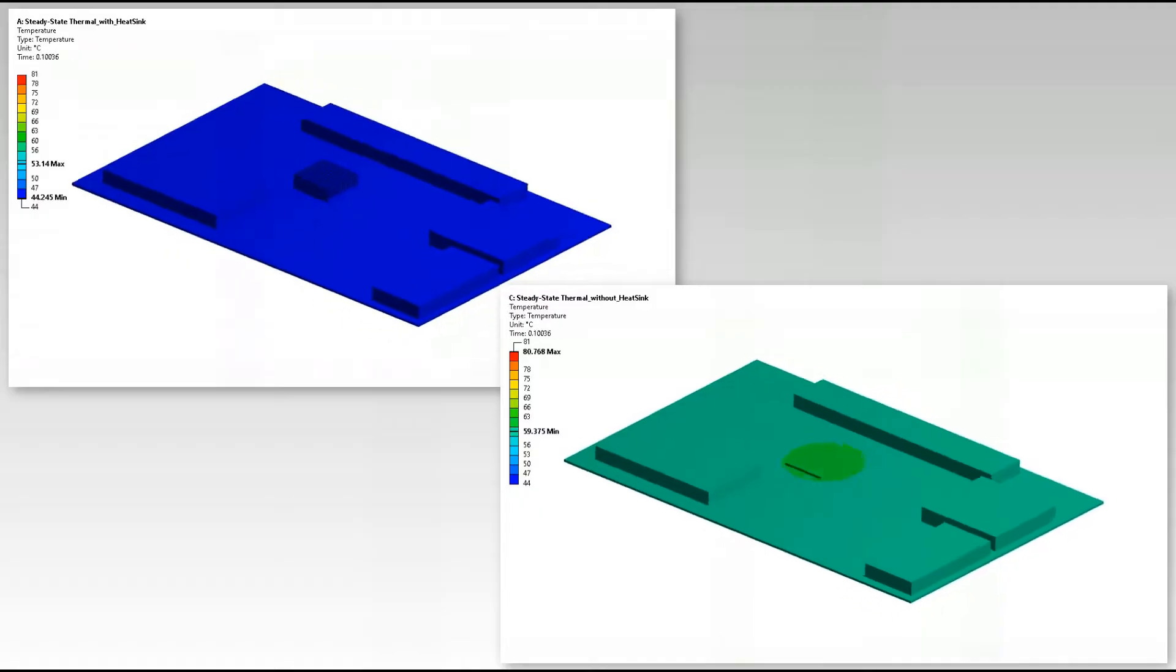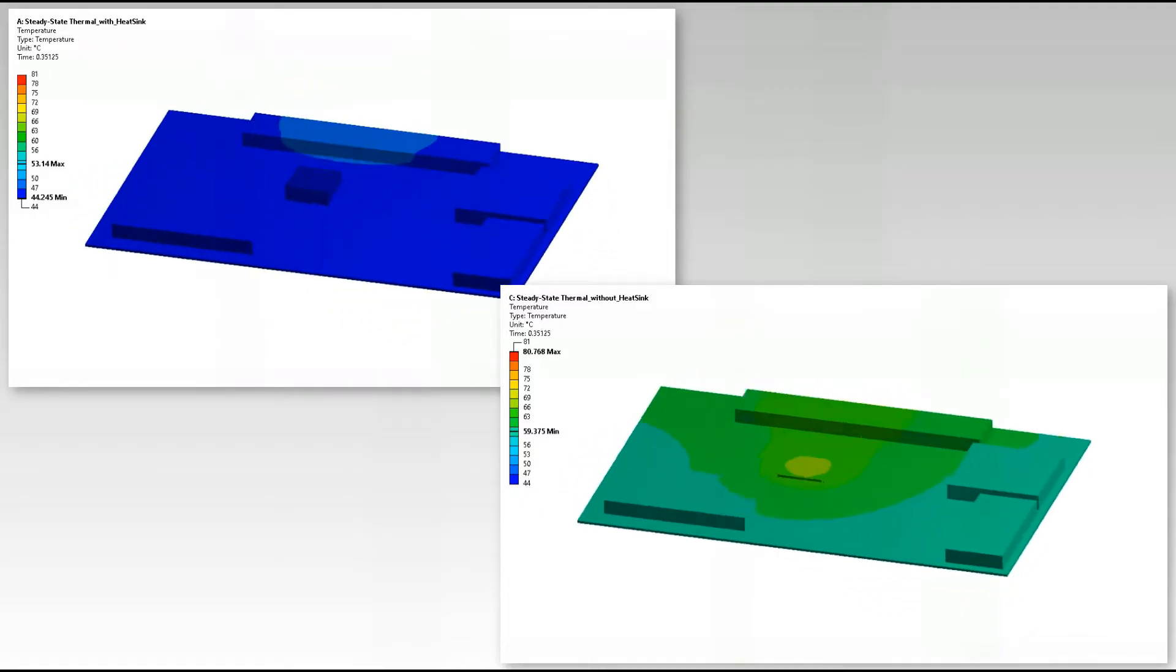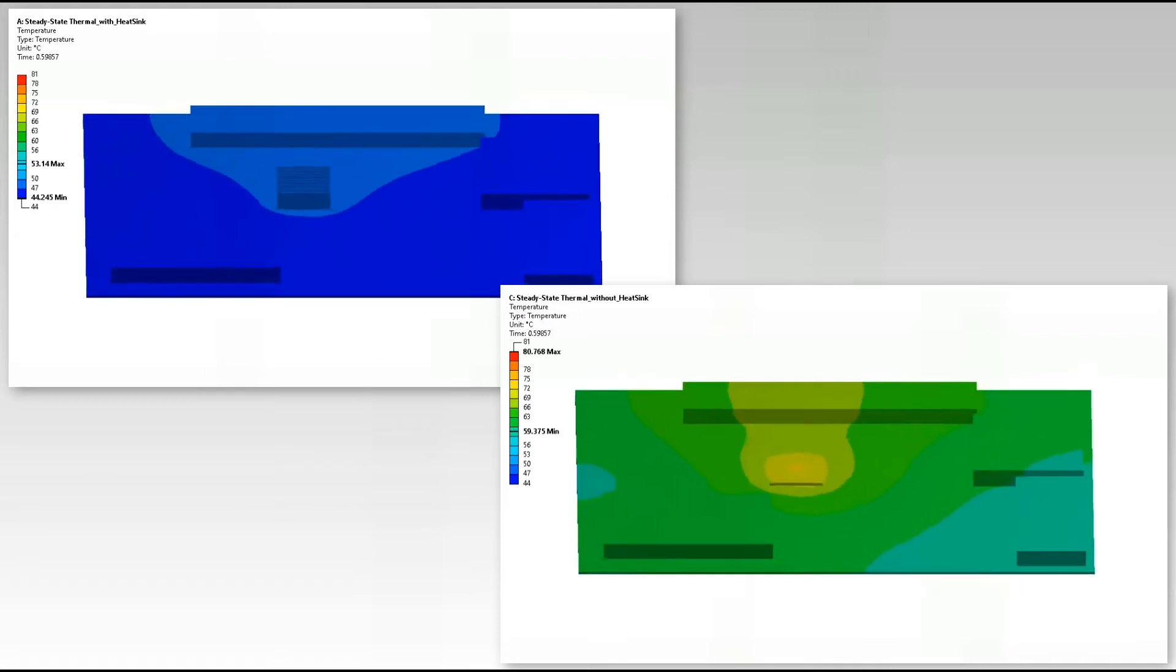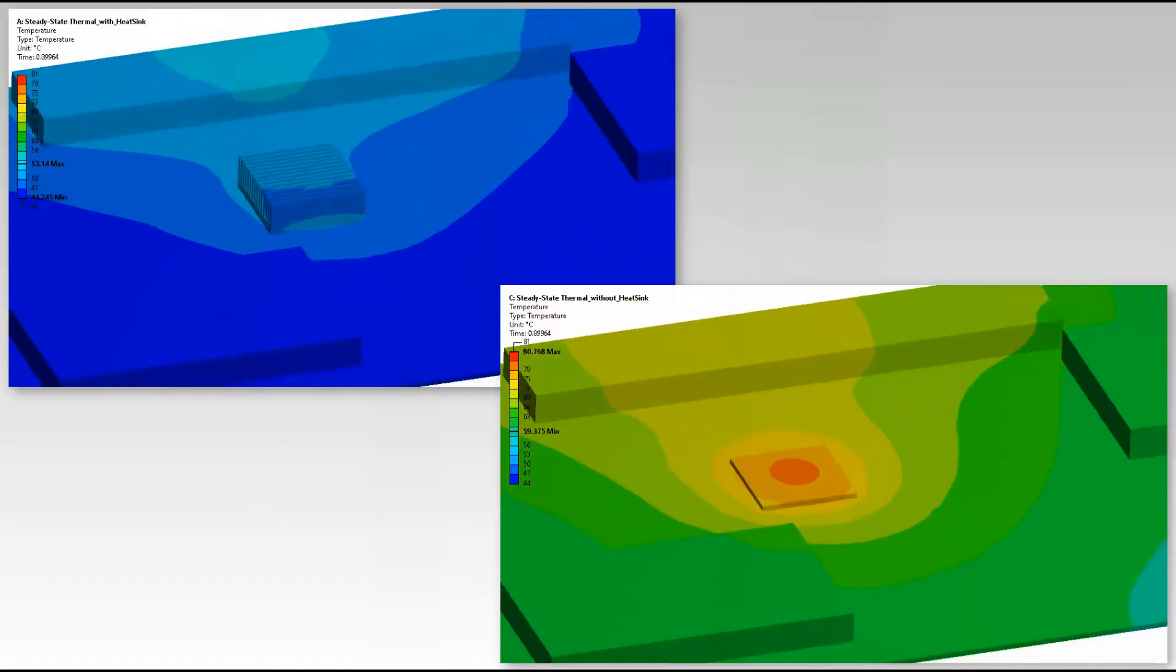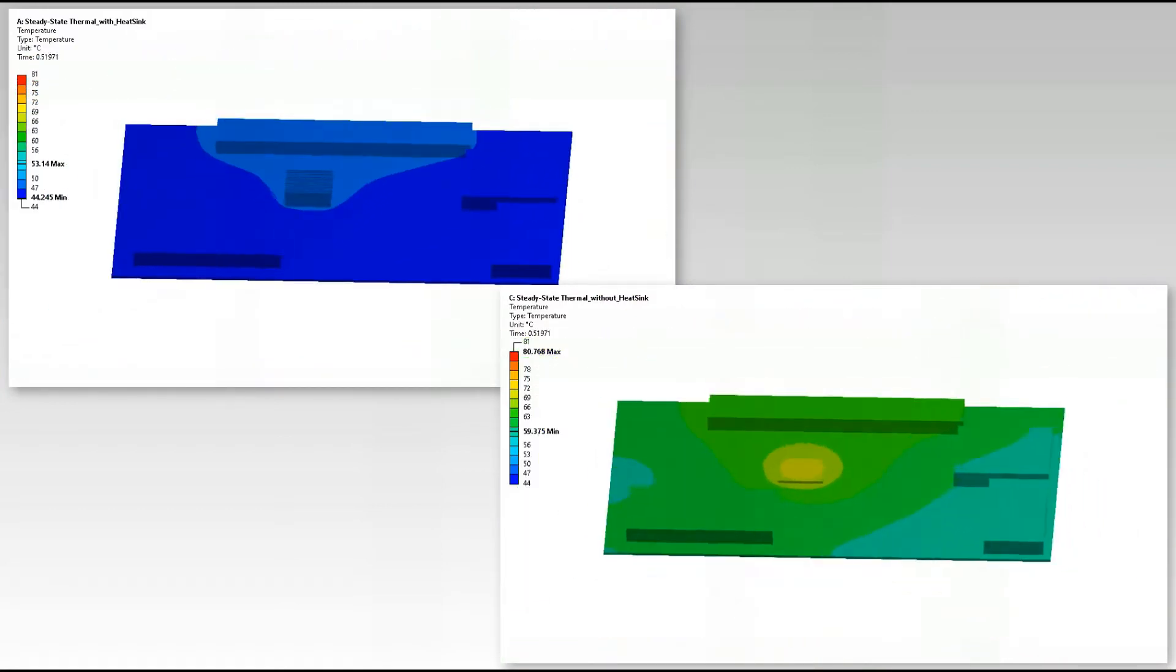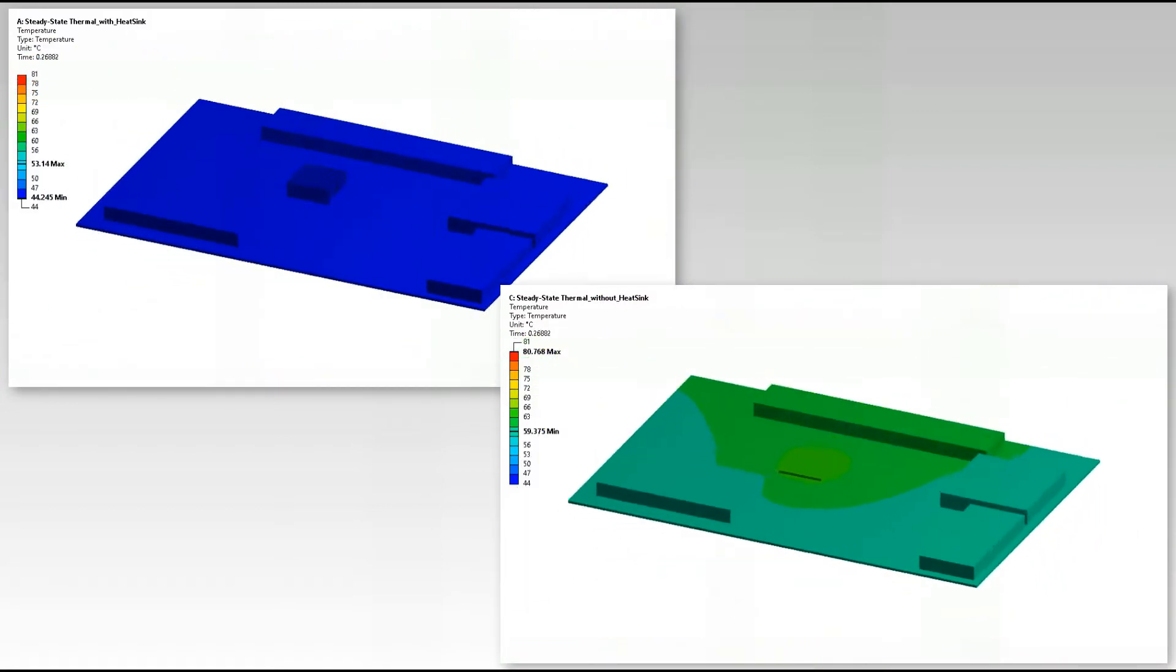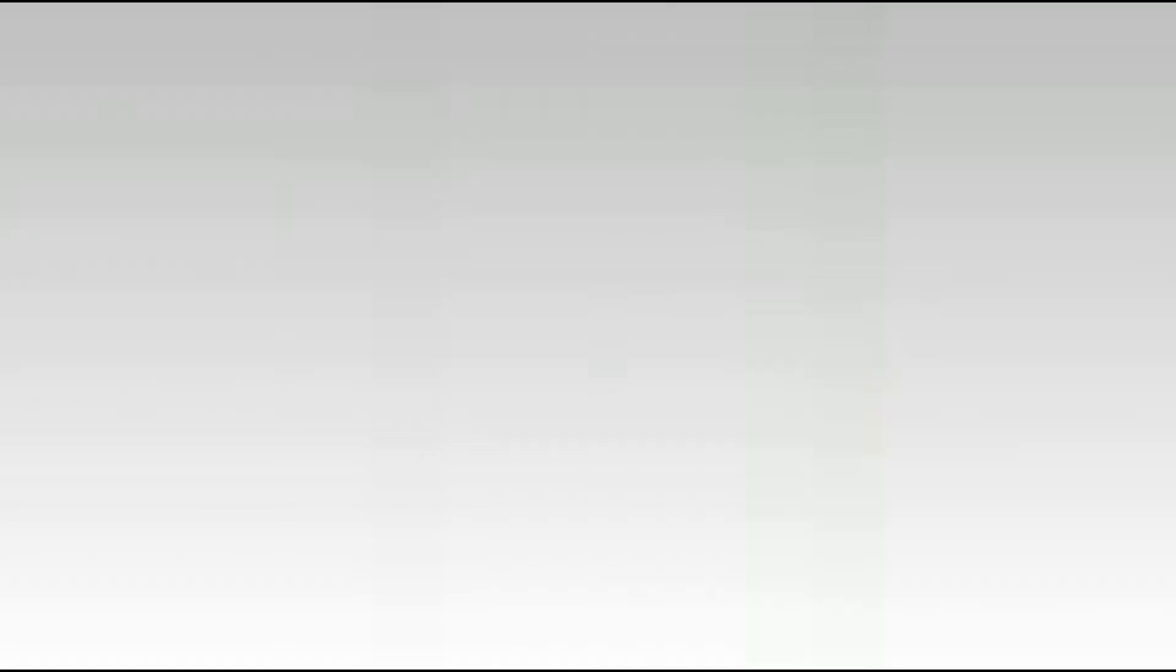Once we compare the results for both cases, we can observe that the heat sink helps us to cool down the temperature of the overall laptop system very effectively. With the heat sink, the maximum temperature drops by approximately 30 degrees Celsius. Thus, we can conclude with this comparative study that the forced convection on the heat sink can help the laptop cool down and avoid overheating. The heat sink can be effective in providing more surface area from which heat is removed via convection.